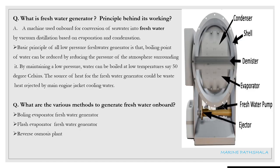The next question is: what is a fresh water generator and the principle behind its working? A fresh water generator is a machine used onboard for conversion of sea water into fresh water by vacuum distillation based on evaporation and condensation. The basic principle is that the boiling point of water can be reduced by reducing the pressure of the atmosphere surrounding it. By maintaining a low pressure, water can be boiled at low temperatures, say 50 degrees Celsius. The source of heat could be waste heat rejected by the main engine jacket cooling water.